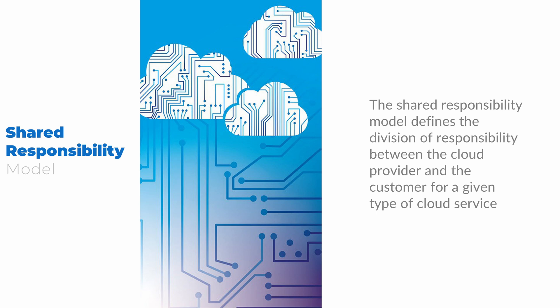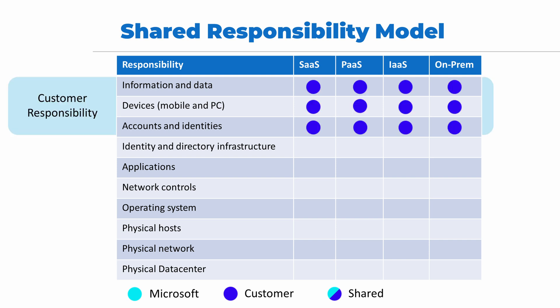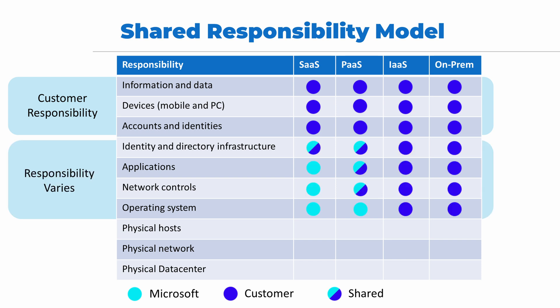The shared responsibility model defines the division of responsibilities for a given type of cloud service. The types of cloud services include SaaS, PaaS, and IaaS. For comparison, we'll add on-premises or private cloud into the mix. For all cloud types, the information and data, computers used to access the service, and accounts and identities are the customer's responsibility. The data we add to the platform — for example, the content added to SharePoint — is the customer's responsibility. Also, managing the accounts or users who get access to the system is the responsibility of the customer. The responsibility varies for identity and directory infrastructure, applications, network control, and operating system.